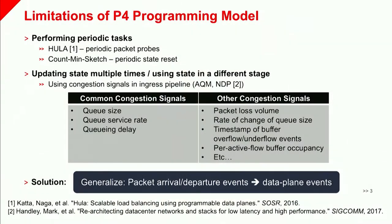Additionally, a real piece of architecture will have the pipeline running at faster than line rate just for the purposes of being able to process some of this recirculated data and the generated packets. There are a number of data plane applications that don't quite fit into the P4 programming model. One of those is applications that perform periodic tasks — for instance, Hula, a load balancing application that needs to periodically generate probe packets to measure link utilization along various paths.